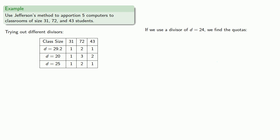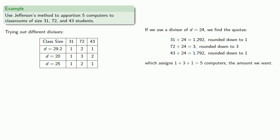Finally, if we use a divisor of 24, we find our quotas and round them down. Now we've assigned one plus three plus one, five computers, which is the amount we have available. So our final apportionment will be one, three, one.